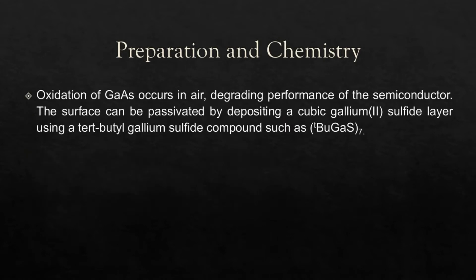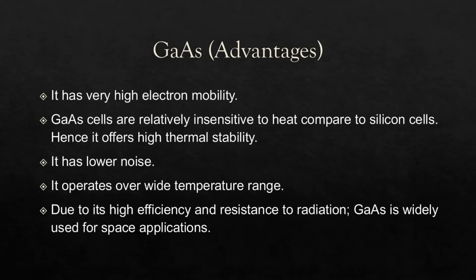The oxidation of GaAs occurs in air, degrading semiconductor performance. The surface can be passivated by depositing a cubic gallium sulfide layer using a tert-butyl gallium sulfide compound. For advantages, GaAs has very high electron mobility. GaAs cells are relatively insensitive to heat compared to silicon cells, offering high thermal stability. It has lower noise and operates over a wide temperature range. Due to its high efficiency and resistance to radiation, GaAs is widely used for space applications.